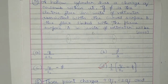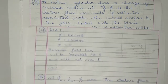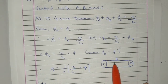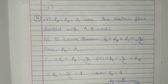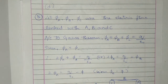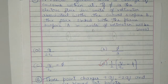Question 5: A hollow cylinder has a charge Q coulombs within it. If φ is the electric flux associated in units of volt-meter with the curved surface B, the flux linked with the plane surface A in units of volt-meter will be — according to Gauss's law, the total flux through any closed surface is Q by epsilon naught. The flux through B plus flux through C plus flux through A equals Q by epsilon naught. Since flux from A and C are equal, 2φ_A plus φ_B equals Q by epsilon naught. φ_B is given as φ, so by solving we get (1/2)(Q/ε₀ − φ). It is option D.